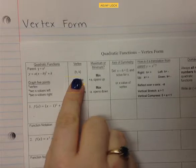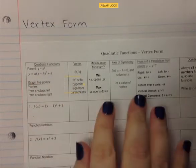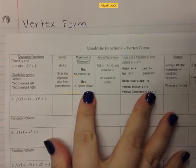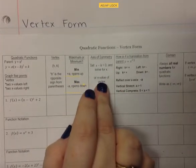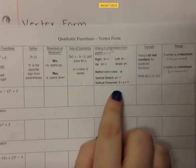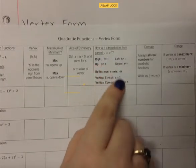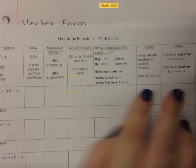We're going to find the vertex first because of the way function notation and vertex form work. We'll determine the min or max the same way we normally do. The axis of symmetry still comes from your vertex, so we'll already have that. We're really going to focus on what the function notation tells us, how the graph actually moves, and then we'll have the domain and range like normal.